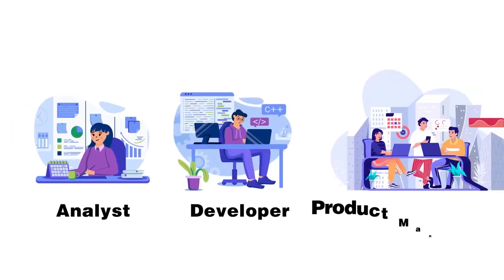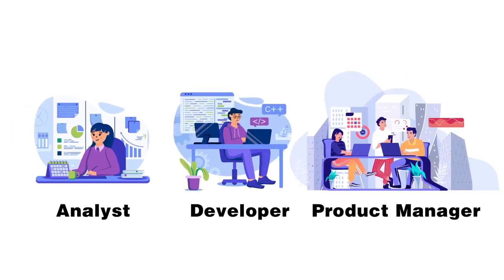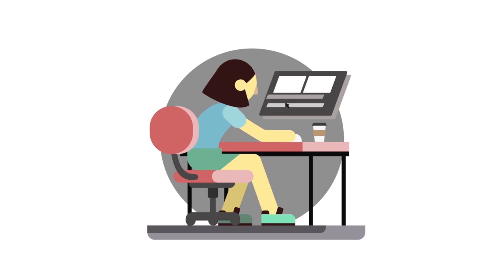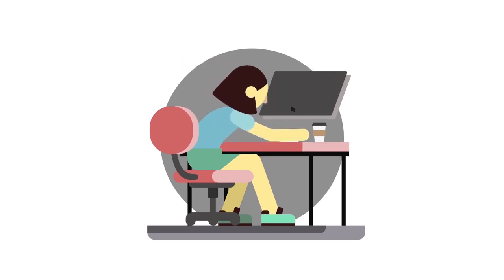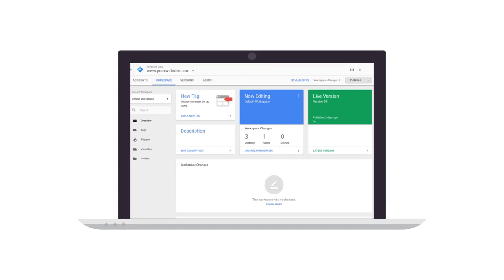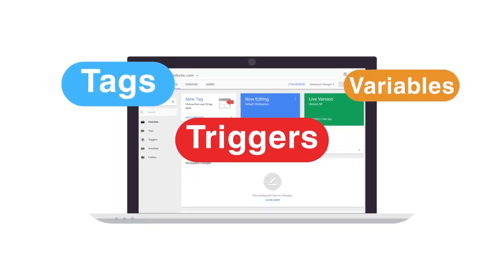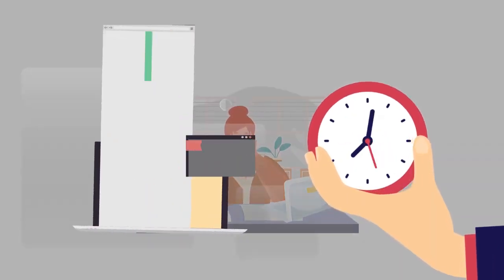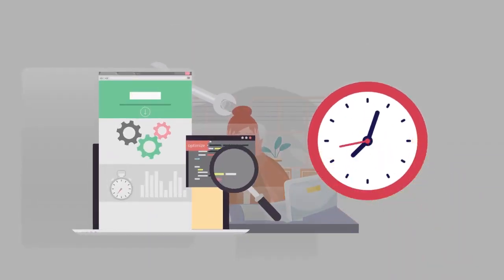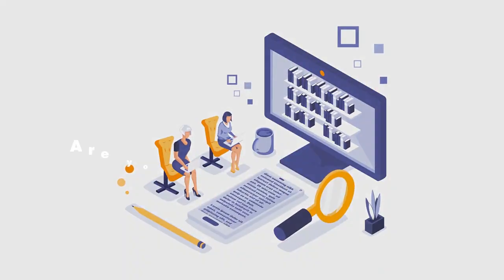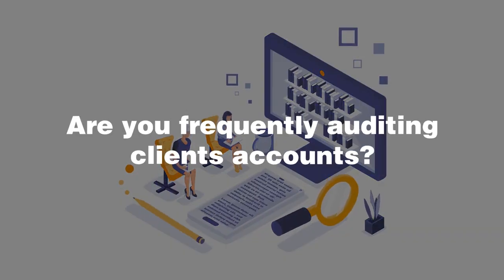Are you an analyst, developer, or product manager who uses Google Tag Manager a lot? Then you'll understand how problematic it can be to have GTM containers bloated with lots of unused tags, triggers, and variables, and no coherent naming structure. You can waste countless hours trying to manually clean up these containers, especially if you're an agency and are frequently auditing clients' accounts.